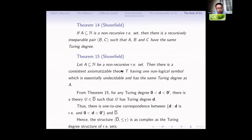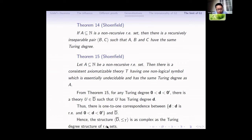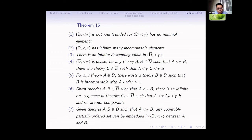Shoenfield proved some very useful theorems: for any non-recursive RE set A, there is a recursively inseparable pair B,C such that A has the same degree as B and C. Based on this, he proved that for any non-recursive RE set A, there is a consistent theory T having only that RE set as its axioms, which is essentially undecidable and has the same Turing degree as A. So for any Turing degree between zero and the zero-jump, there is a theory U in D-bar such that U has that Turing degree. There is a one-to-one correspondence between RE degrees between zero and zero-jump and elements of D-bar.